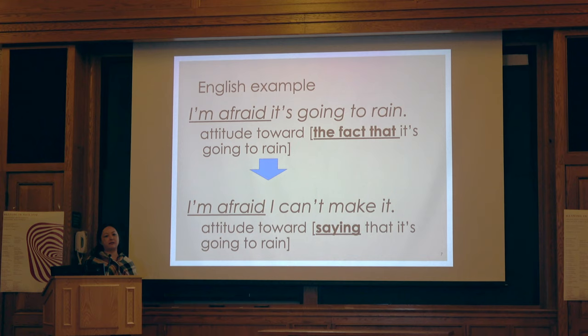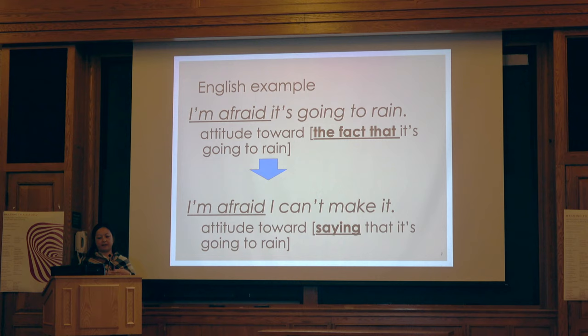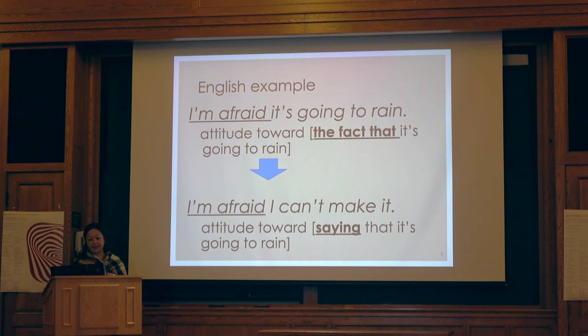Another example close to the case study I'm going to talk about is the English construction 'I'm afraid.' For instance, 'I'm afraid it's going to rain' expresses attitude toward the fact that it's going to rain — it's context-dependent. But also, 'I'm afraid I can't make it' — if you are sensitive about refusing the proposal or invitation, this is interpreted as having intersubjective meaning.